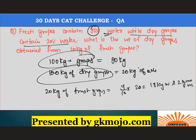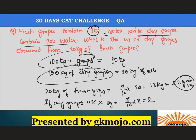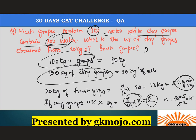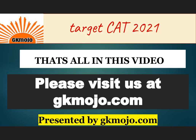For dry grapes, the non-water material is 80 percent. If dry grapes weigh x kg, then (8/10) multiplied by x equals 2, since 80 percent is non-water. So x equals 20 divided by 8, which is 2.5 kg. The correct answer is 2.5 kg of dry grapes. Just follow this method and try it on your own. That's all for this video — please visit us at gkmojo.com. Thank you.